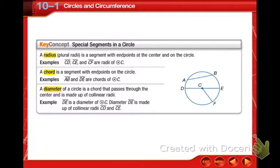A chord is a segment with endpoints on the circle. A, B, and D, E are examples of chords. And D, E is actually a special chord, which is the diameter. A diameter of a circle is a chord that passes through the center and is made up of collinear radii. So two radii that connect together to form a line across the circle going through the middle. So D, E is our diameter example here.